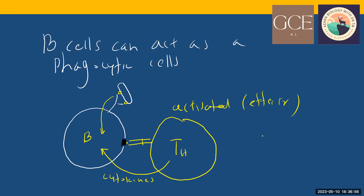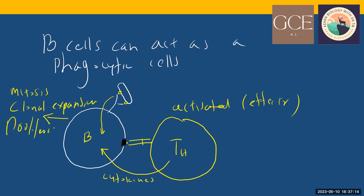The chemical signal is given in terms of cytokine molecules. Now the B-cell can undergo the same process — mitosis, clonal expansion, proliferation — and it produces millions and millions of B-cells specific for this antigen. So the B-cell number is increasing, specific for this antigen.